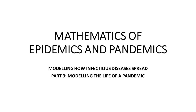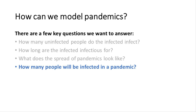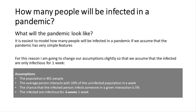This is the third video in my series on the mathematics of epidemics and pandemics. In this video we're going to make some adjustments to the model we built in the previous videos to work out how many people are going to be infected in a pandemic and when. Rather than assuming people are infectious for two weeks, I'm going to assume they're only infectious for one week. This means that in any given week, only the people infected in the previous week are going to be out there infecting other people.